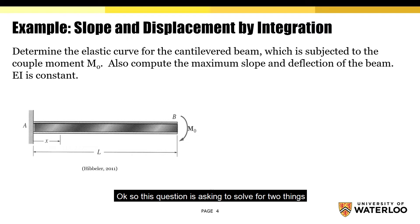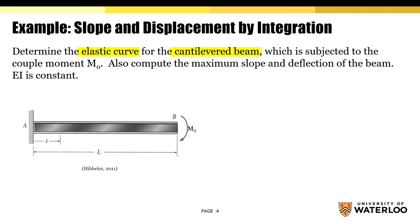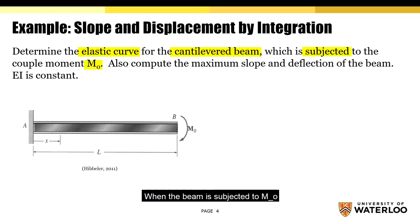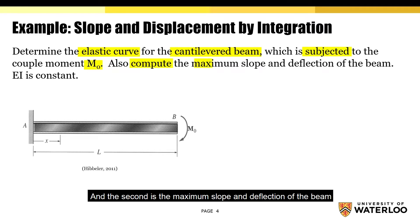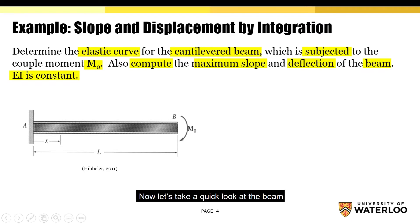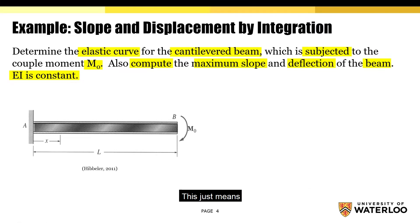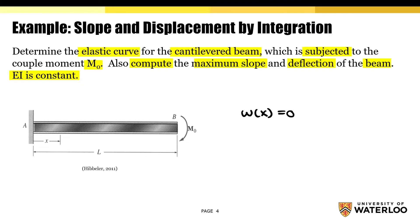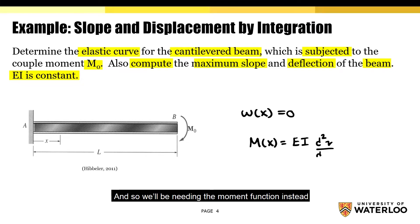This question is asking us to solve for two things. The first is the elastic curve for the cantilever beam when the beam is subjected to MO. The second is the maximum slope and deflection of the beam. We're also told that EI is constant. Notice how there isn't any distributed loads acting on it — this means the distributed load function is equal to zero, and so we'll be needing the moment function instead.